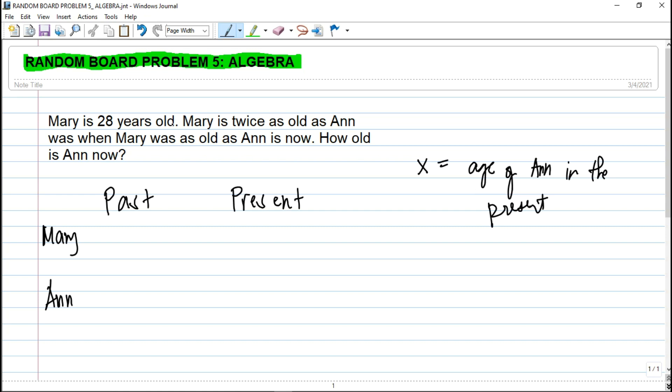Mary is 28 years old. So 'is' is present. We'll place it here in the present. So this is 28. That is the age of Mary in the present. Mary is 28 years old.